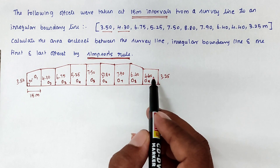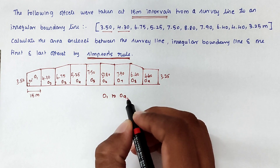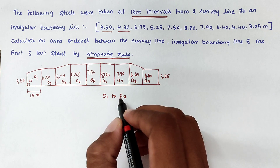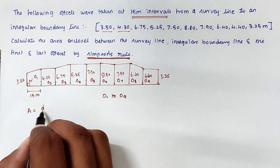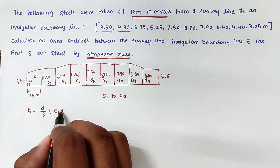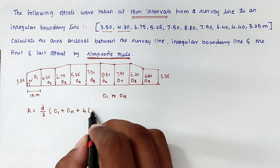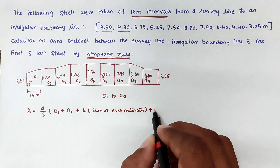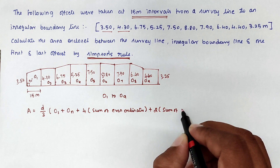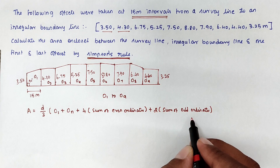For the 10th ordinate we will use the trapezoidal rule. We apply Simpson's rule using the formula: Total Area = (d/3) × [ordinate 1 + ordinate n + 4 × (sum of even ordinates) + 2 × (sum of odd ordinates)]. This is the formula we use for calculating area using Simpson's rule.